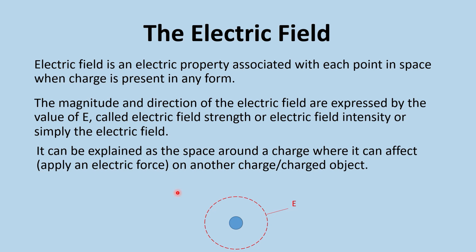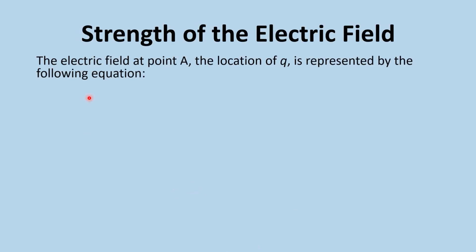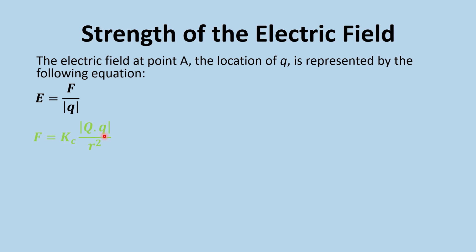The electric field at a point is calculated using the equation: electric field strength equals electric force divided by charge, or the amount of force per unit charge. We know the electrostatic force is F = Kc·Q1·Q2 / R², where Kc is Coulomb's constant, Q is the source charge, Q is the test charge, and R is the distance between them. Now if we replace F in this formula we get a new expression for E.